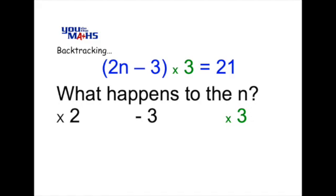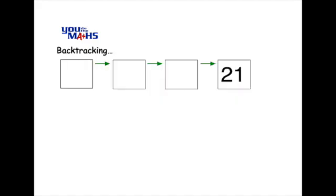In this case, our equation has one variable on one side of the equation. In other words, the letter n on the left hand side of the equation. And that means that backtracking will be a suitable approach to solve this problem. Let's have a look at how it works.